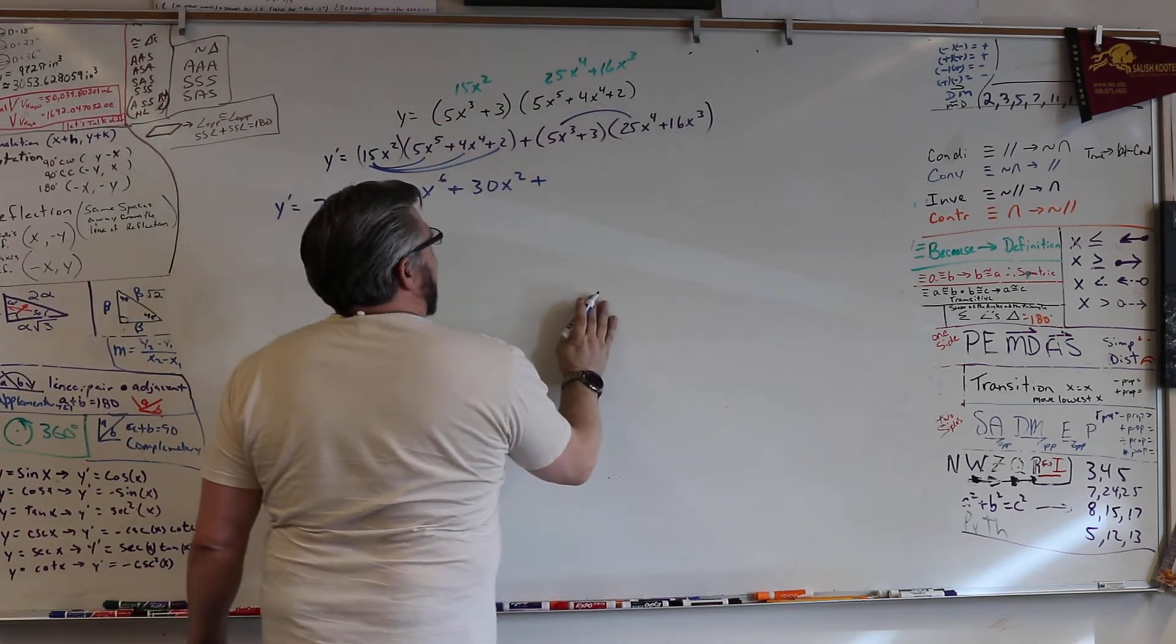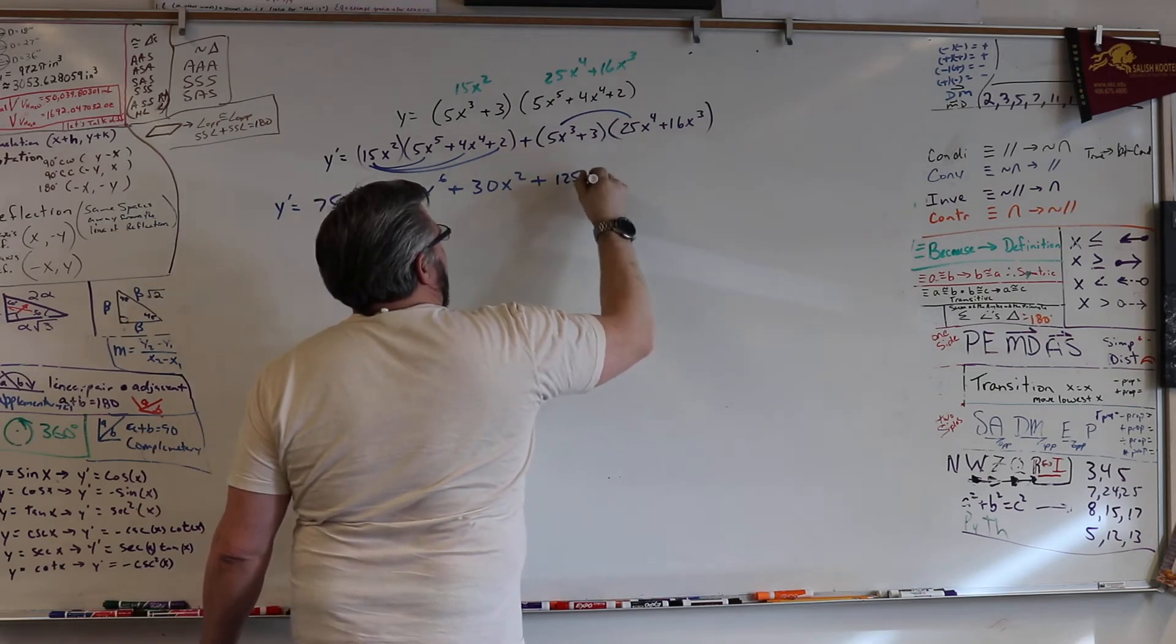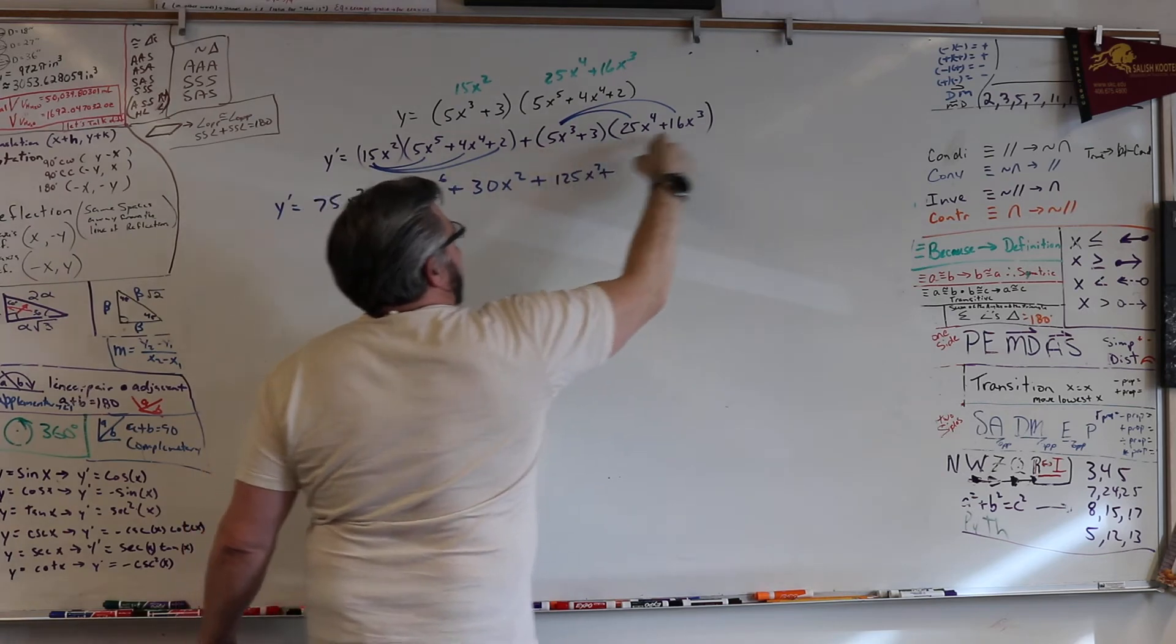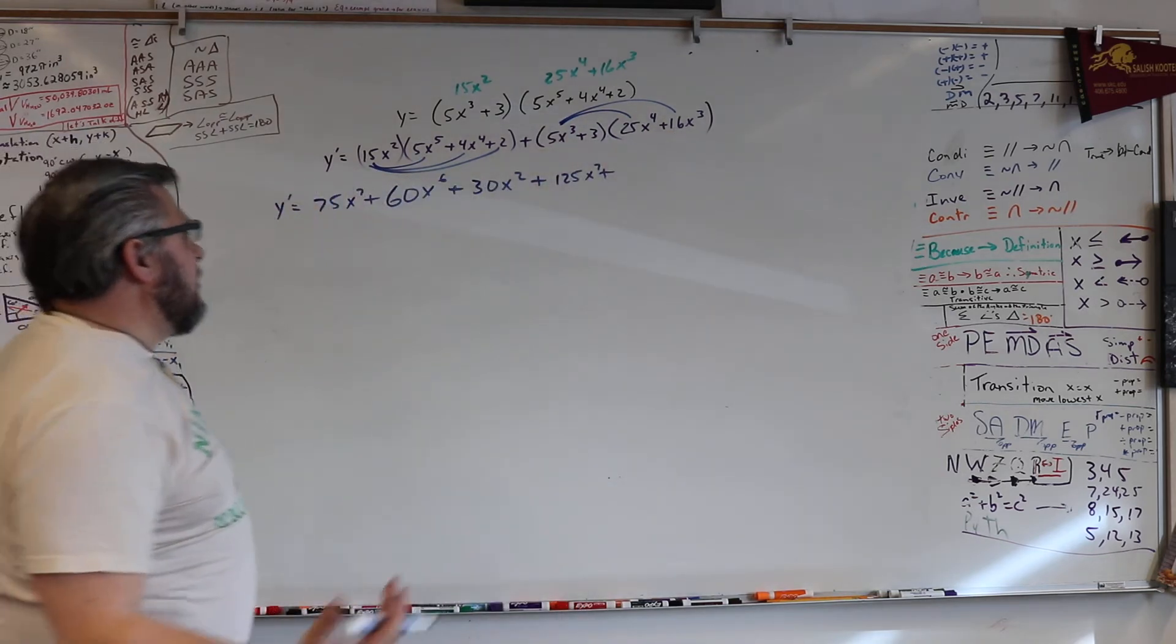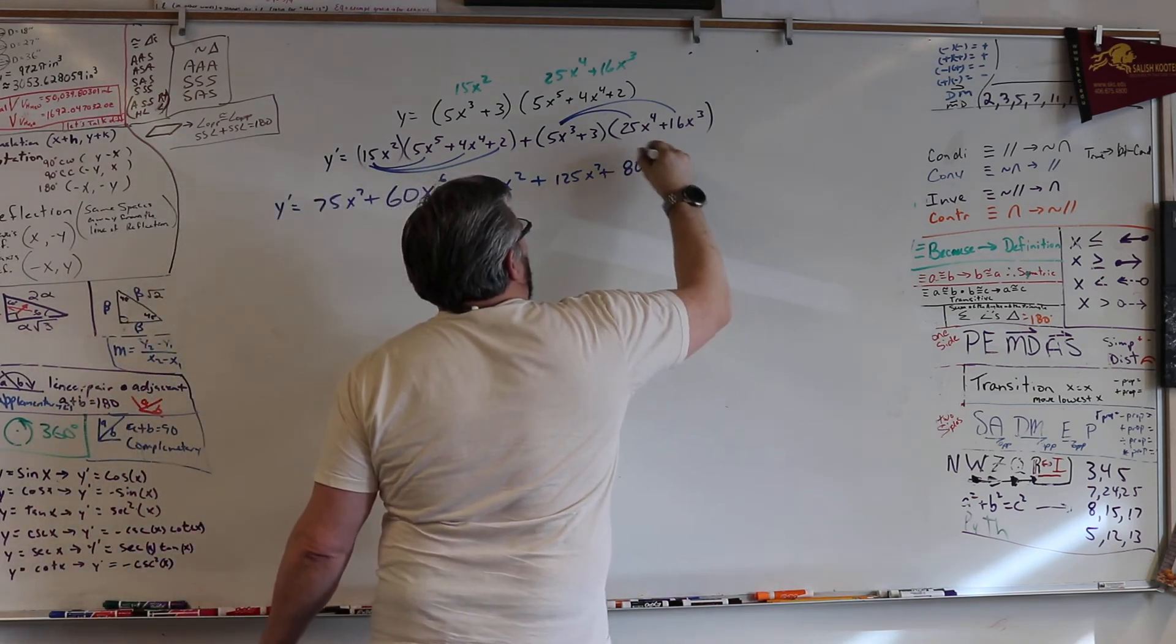Everybody on the block gets this paper. 5 25's is 125 x to the 7th. Plus... 5 16's. That'd be 50 plus 30. That'd be 80 x to the 6th.